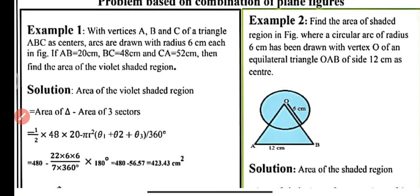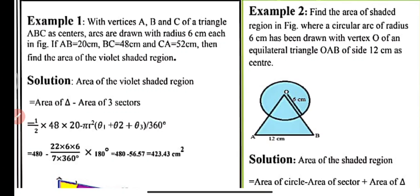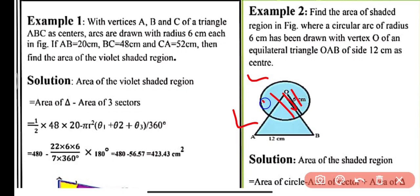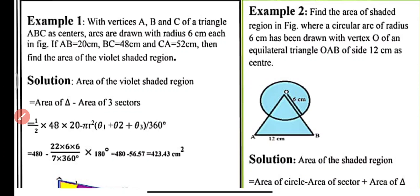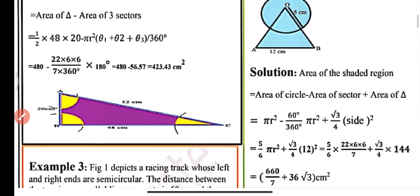Now example number 2: find the area of the shaded region where a circular arc of radius 6 cm has been drawn with vertex O of an equilateral triangle OAB of side 12 cm as center. We have equilateral triangle AOB with side 12 cm and a circle drawn at vertex O with radius 6 cm. The area of the shaded region equals area of circle minus area of sector plus area of triangle.